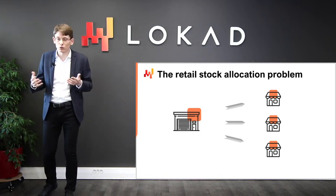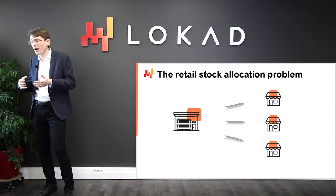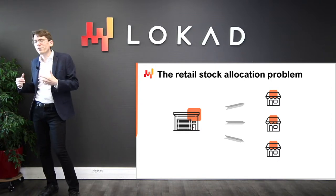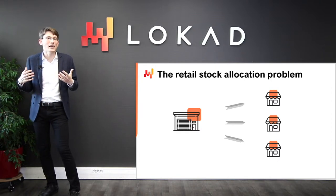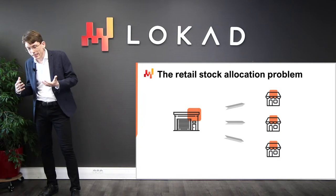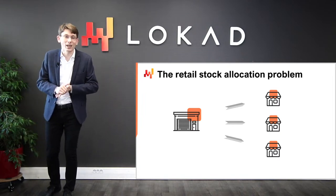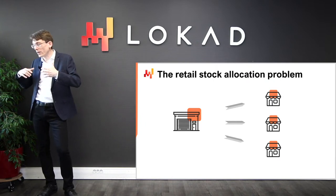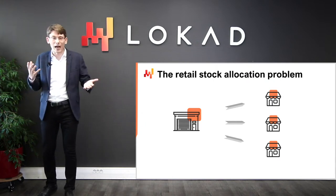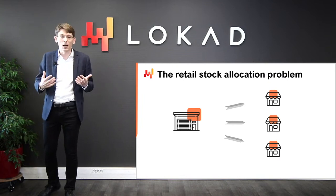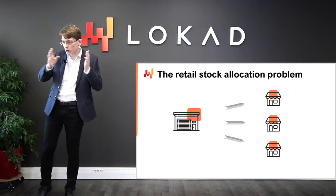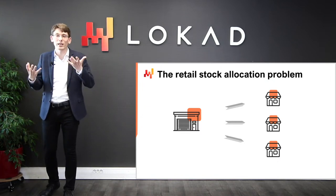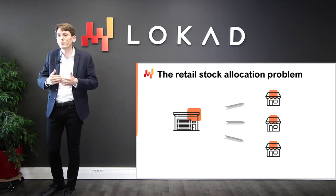It is also reasonable to expect store shelf capacity limits. If the distribution center had unlimited stocks, the problem would devolve into a single-echelon supply chain — there would never be any need to arbitrage between allocating stock to one store versus another. The two-echelon property of the network emerges precisely because stores compete for the same stock.